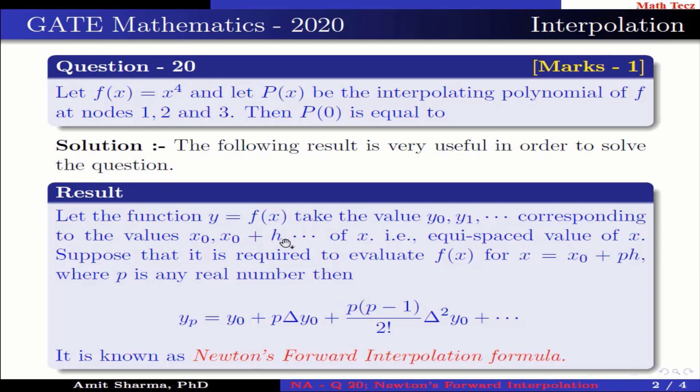x0 + h, and so on, of x—that is, equispaced values of x. Suppose that it is required to evaluate f(x) for x = x0 + ph, where p is any real number.